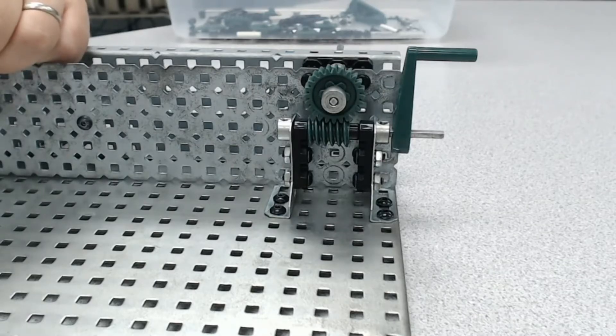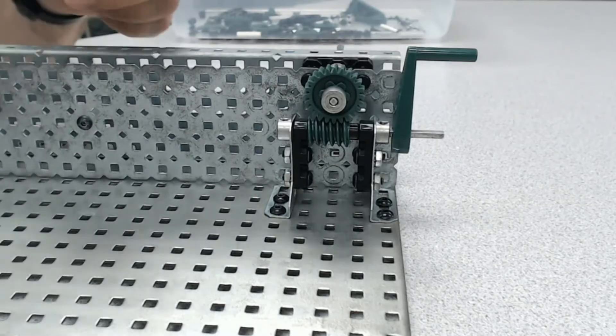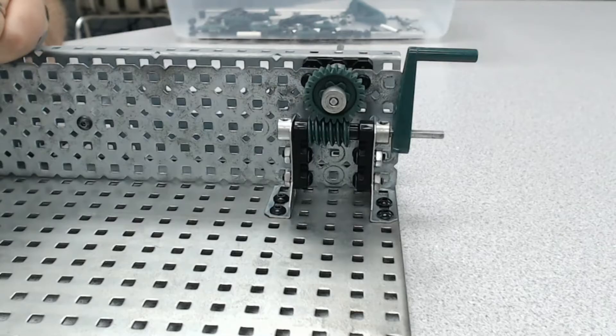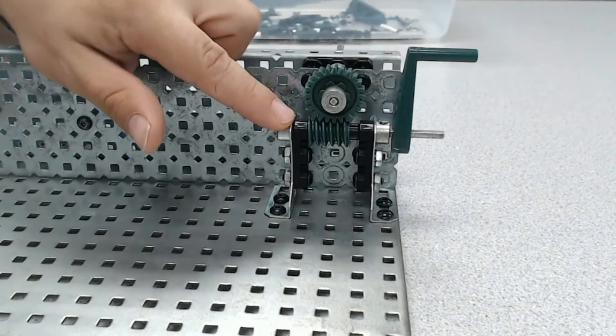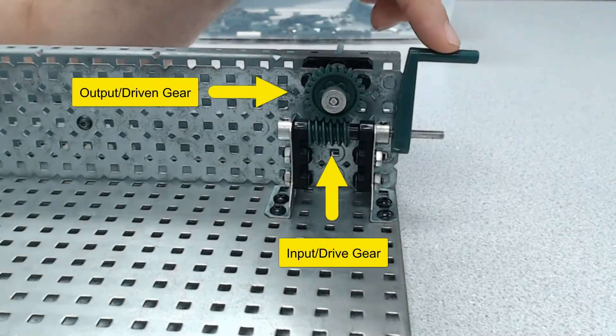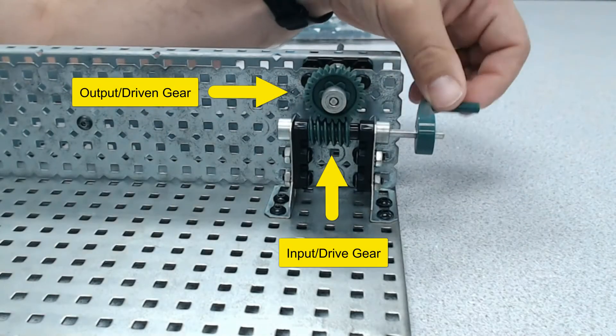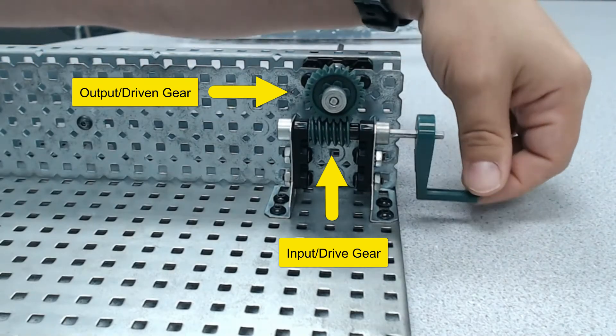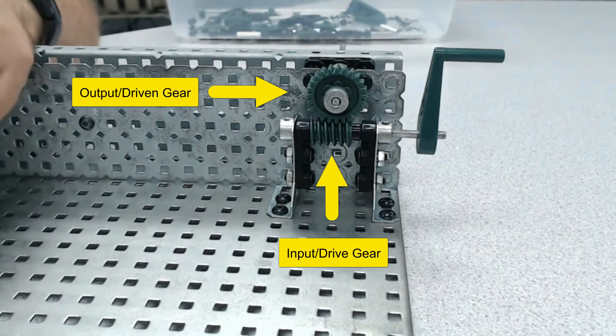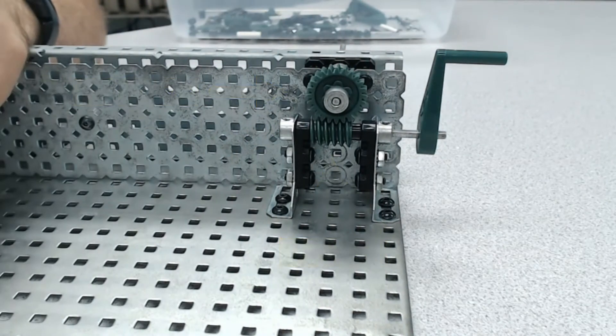Before we do anything else, let's look at our input and output. Looking at this system, which do you feel is the input and the output? If you predicted that the worm is the input, you would be correct. The handle is attached to the worm, so turning the handle puts power into the system, making our input down here, and our output is the wheel.